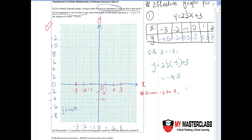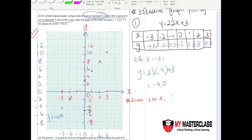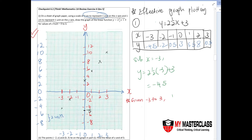Mark the y-axis: negative two, negative four, negative six, negative eight, two, four, six, eight, ten, twelve. Now plot your points: (negative three, negative four point five) falls between negative four and negative five; (negative two, negative two); (negative one, zero point five); (zero, three); (one, five point five); (two, eight); (three, ten point five). You will see these points form a very nice, well-defined straight line.